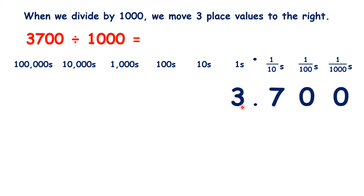So that tells us that we have three units, seven tenths, no hundredths, and no thousandths. But again, if we have zeros at the end of a decimal number, we can ignore them. So our answer to 3,700 divided by 1,000 can just be written as 3.7.